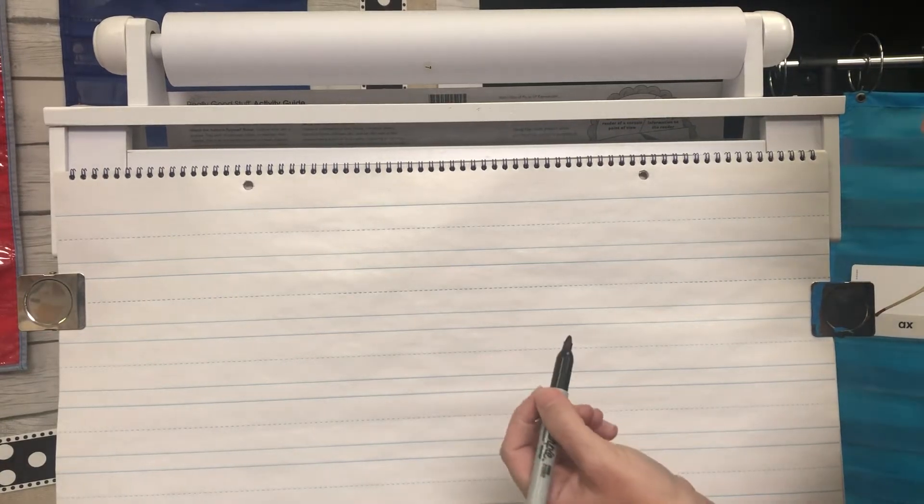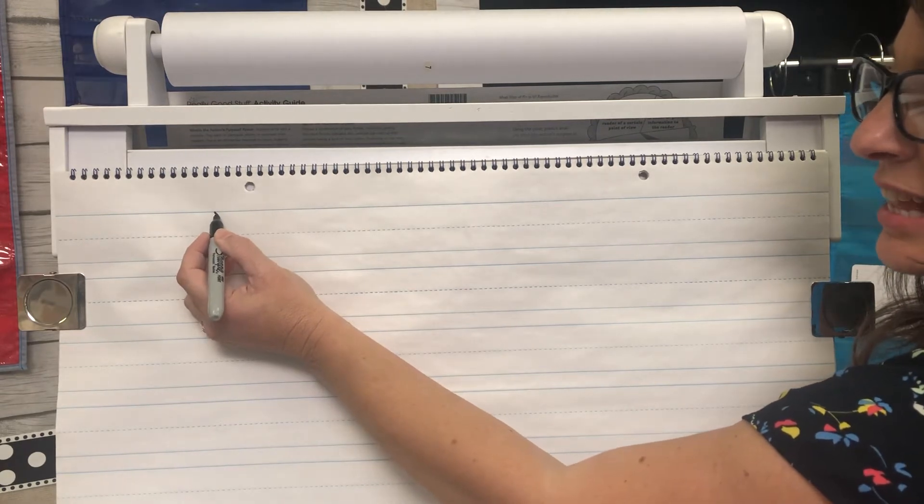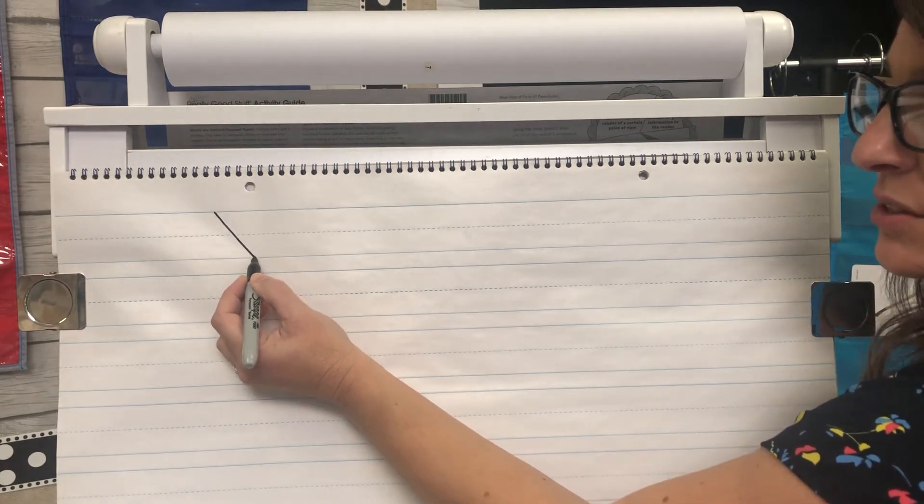Our letter this week is the letter X. When you're making the letter X, you're going to start at the ceiling. You're going to make a slanted line down to the bottom,